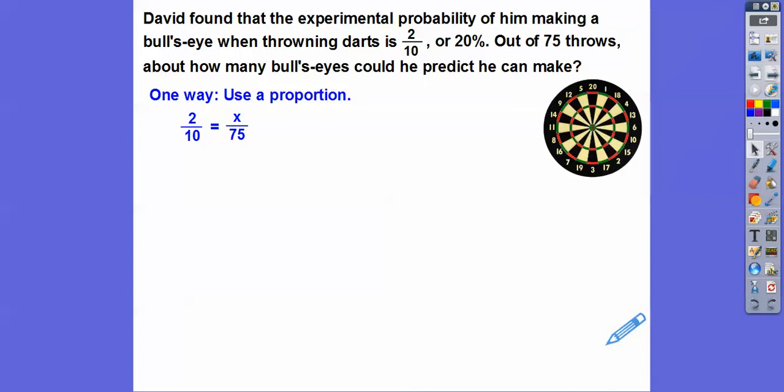One way is to use a proportion. If you have a fraction equals a fraction, we can do this math procedure that's called cross-multiplying. So I'm going to say 10x equals 2 times 75. When we have a proportion, we cross-multiply. So 10x equals 150, and we divide both sides by 10, and we get x equals 15.